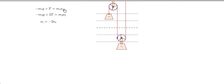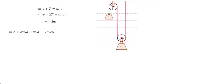We now have three equations: the Newton's second law equations for M1 and M2, and the constraint a1 = −2·a2. We can multiply the M1 equation by 2 and subtract the two equations to eliminate T. This gives: −M2g + 2M1g = M2·a2 − 2M1·a1. Substituting a1 = −2·a2 into this expression yields a term of (4M1 + M2)·a2 on the right-hand side.